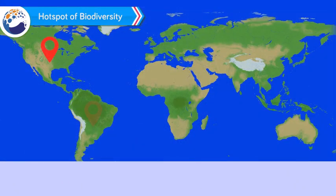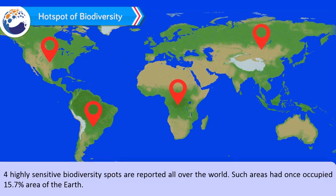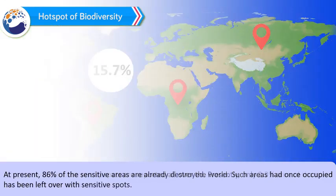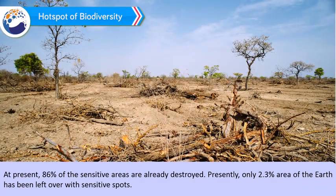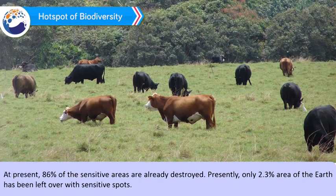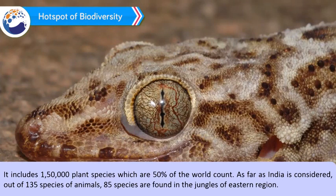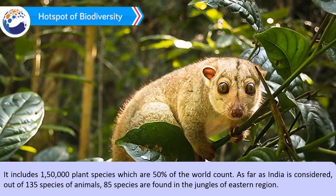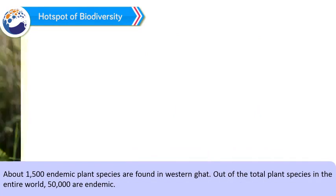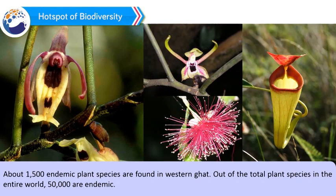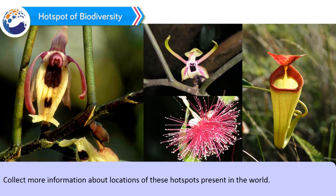Hotspots of Biodiversity: Highly sensitive biodiversity spots are reported all over the world. Such areas had once occupied 15.7% area of the earth. At present, 86% of the sensitive areas are already destroyed. Presently, only 2.3% area of the earth has been left over with sensitive spots. It includes 1,50,000 plant species, which are 50% of the world count. As far as India is concerned, out of 135 species of animals, 85 species are found in the jungles of the eastern region. About 1,500 endemic plant species are found in the Western Ghats, and out of the total plant species in the entire world, 50,000 are endemic.